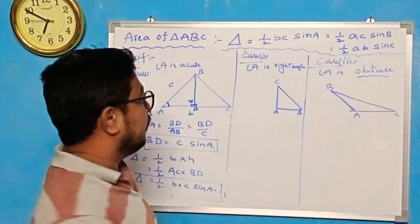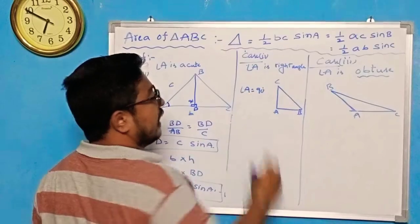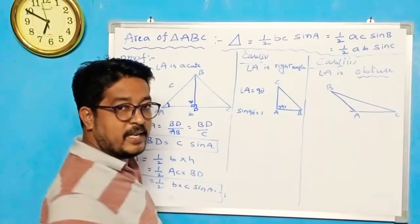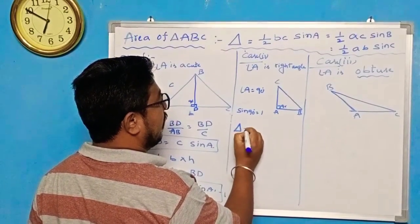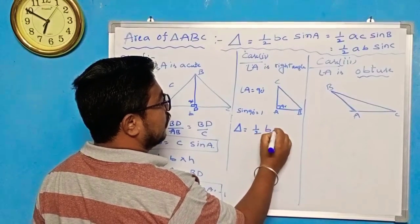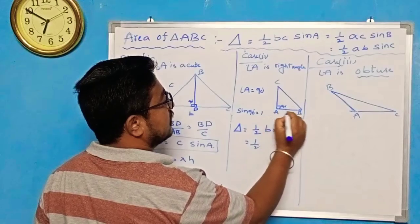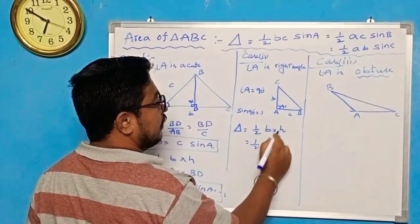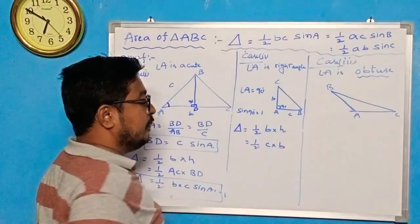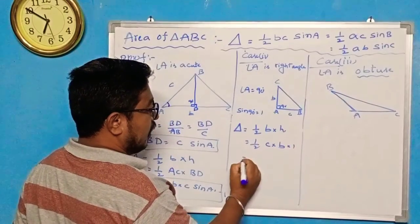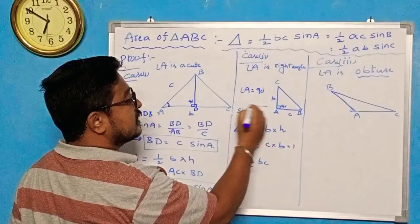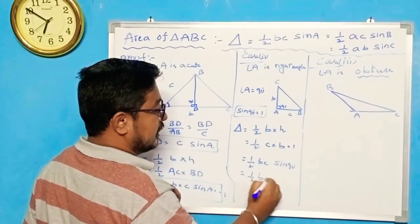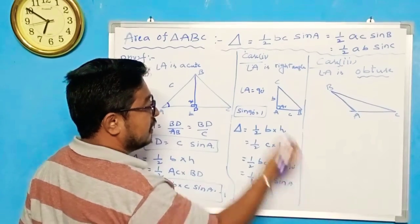Case 2: angle A is a right angle, so angle A is 90 degrees. Area general formula is half base into height. Base is AB, AB notation is C; height is AC, AC notation is B. So area is half CB. There is no sine term, but I can write 1 as sin 90°. So half BC sin 90° is nothing but half BC sin A. This proves the formula for the right angle case.